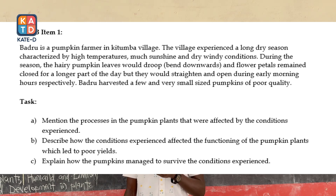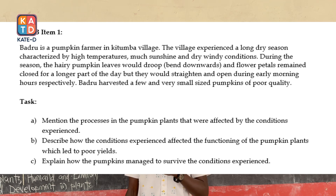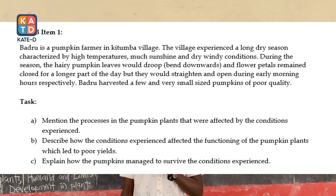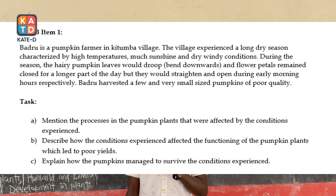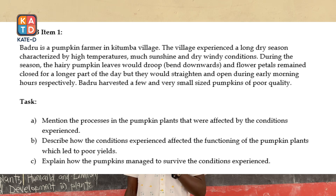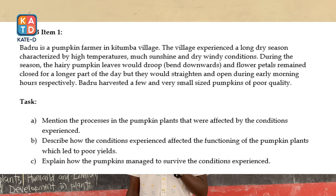During the season, the hairy pumpkin leaves would droop and bend downwards, and flower petals remained closed for a long part of the day, but they would straighten and open during the early morning hours, respectively. Badru harvested a few and very small-sized pumpkins of poor quality.